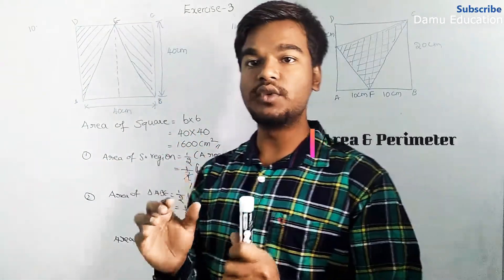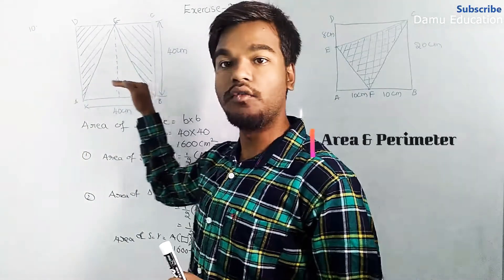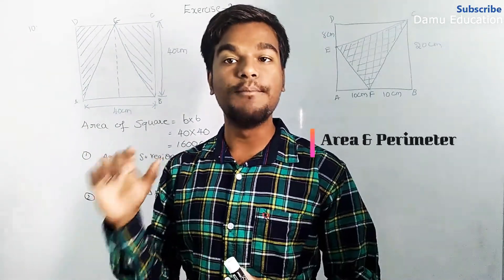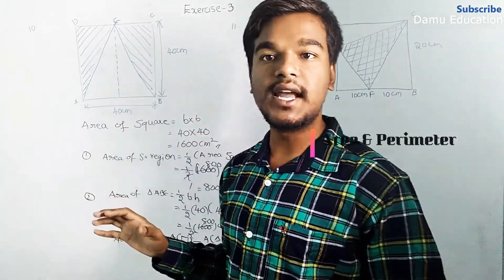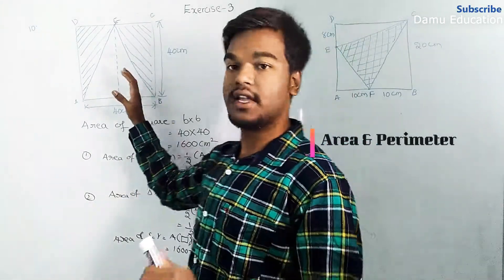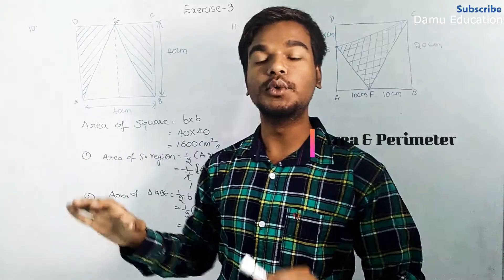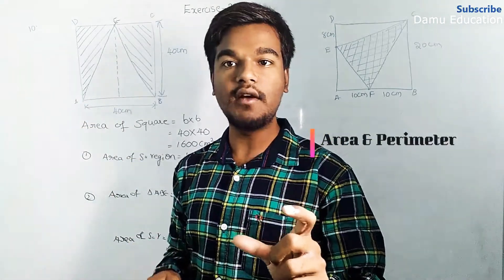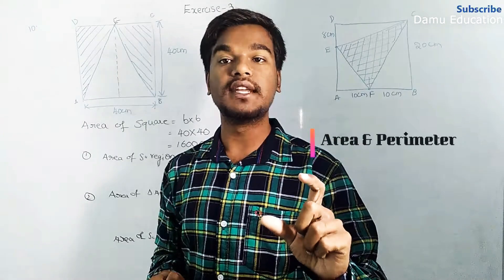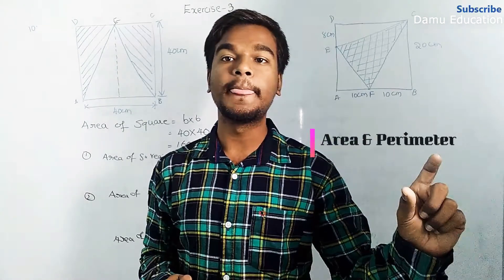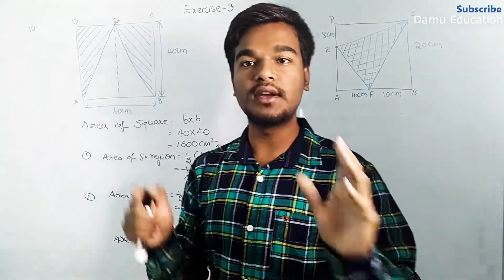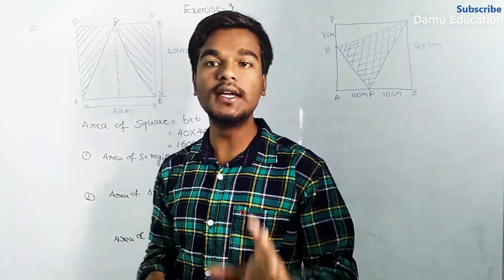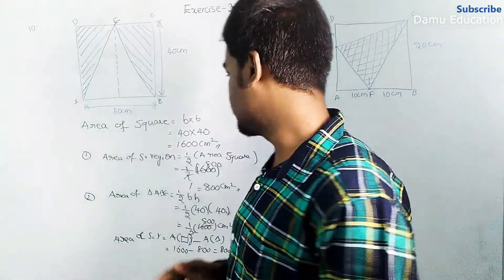This shows that the triangle, which takes one side of the square as its base, will have an area equal to half the area of the square. So the area of the two triangles outside the square equals the sum of those two triangles. These two methods are used for calculating the area of the shaded region.